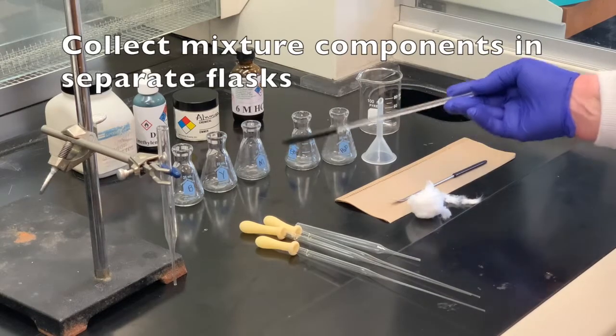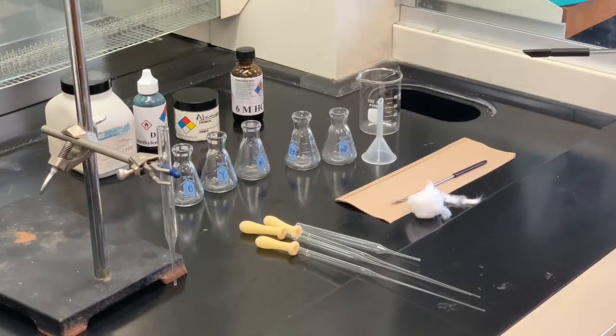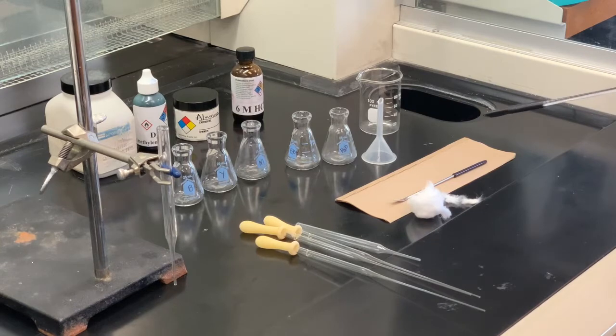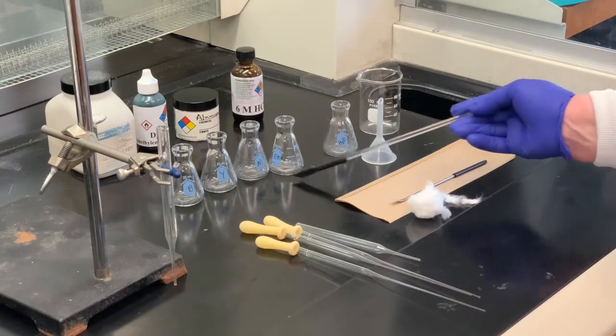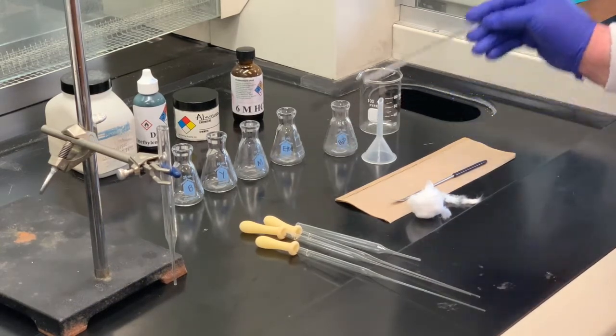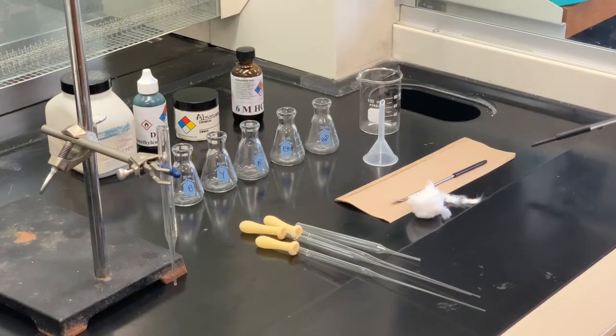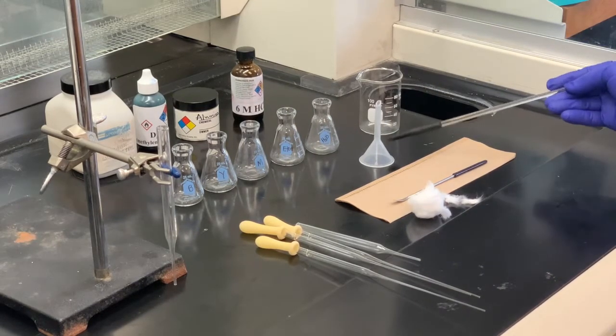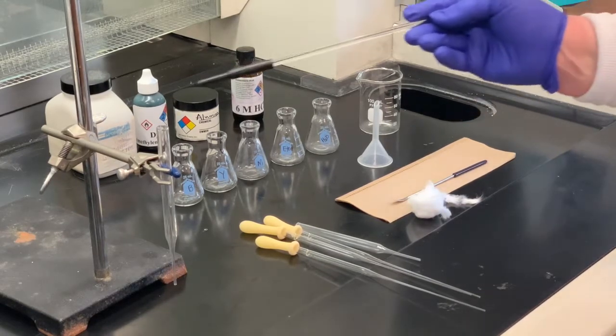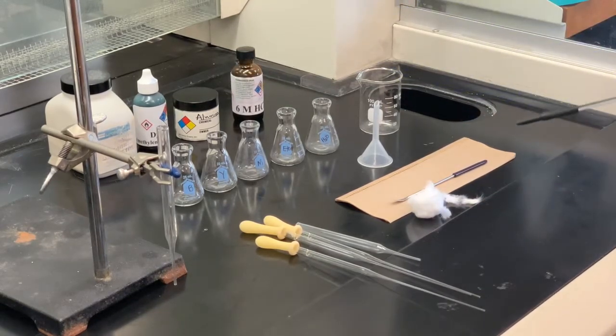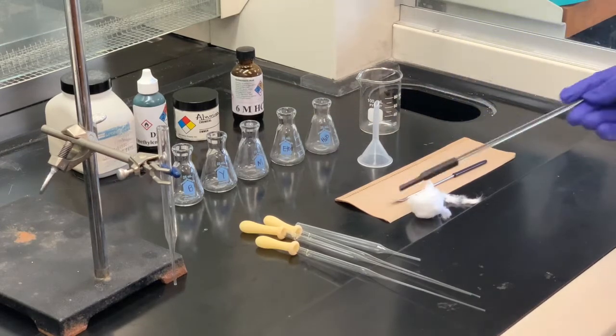We're going to collect our dyes that are in the mixture in these separate flasks. I have one flask that's called a mixture. You'll understand what I mean by that as the experiment goes on. And then I have one that's labeled for ethanol. That's one of our solvents that we're going to use. And then we're also going to use water as another solvent.